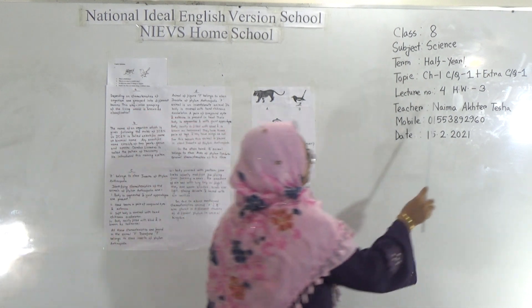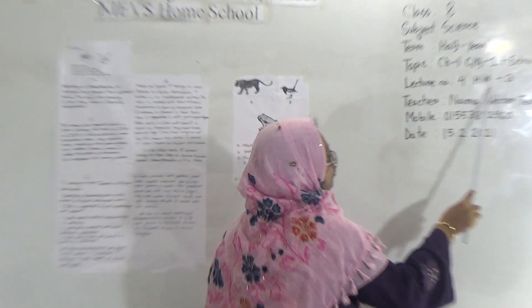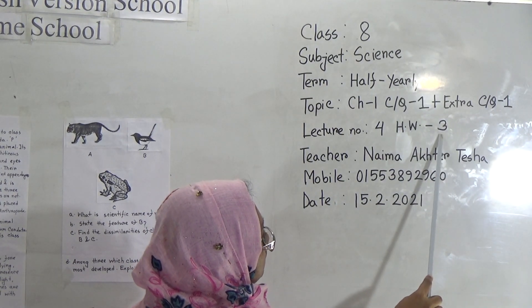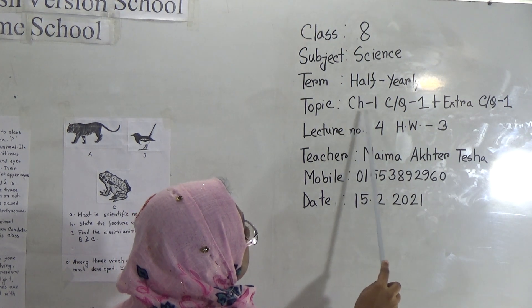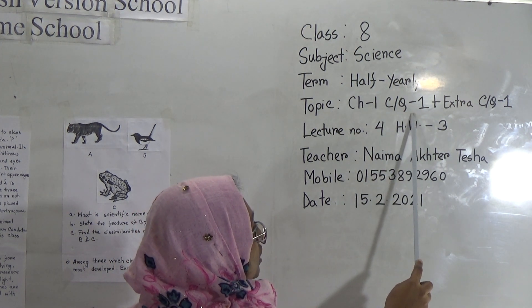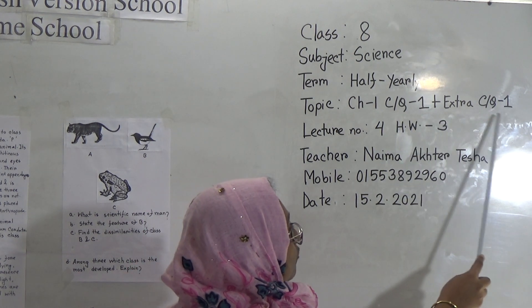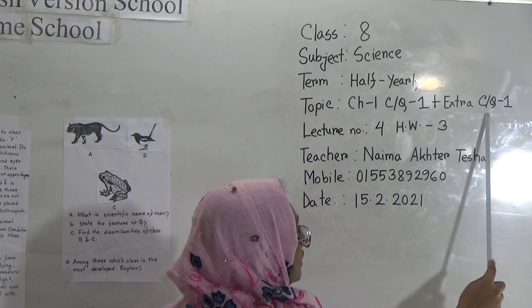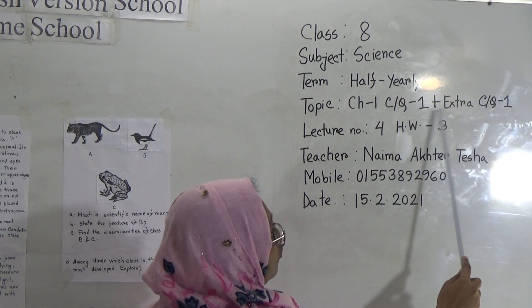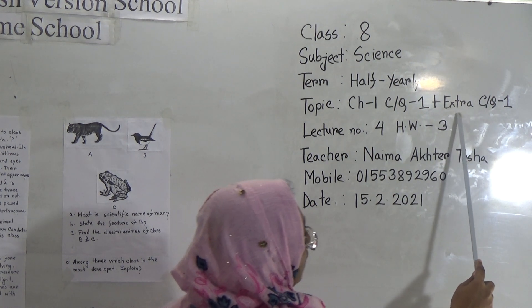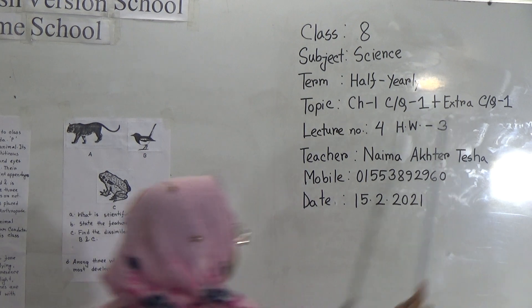Dear students, you saw lecture number 4 and today I will provide you the SW and the number is 3. Today our topic is chapter 1, creative question 1. This creative question is from your book, and extra creative question 1 is not given in your book — I have prepared this for you and I will give SW from this extra creative question.